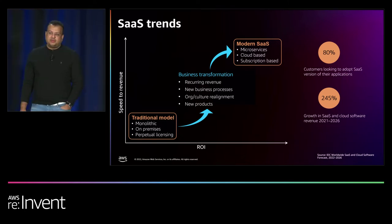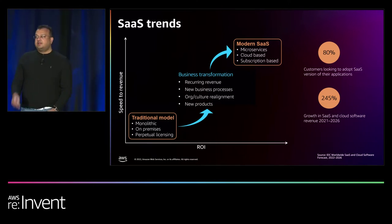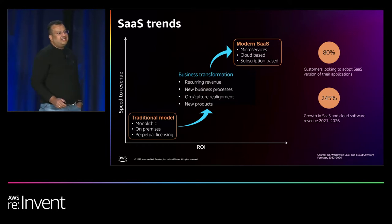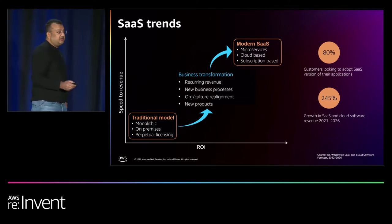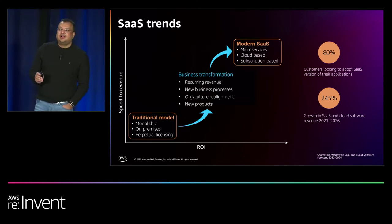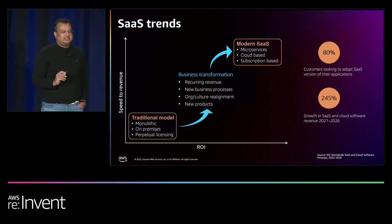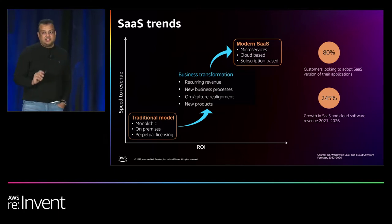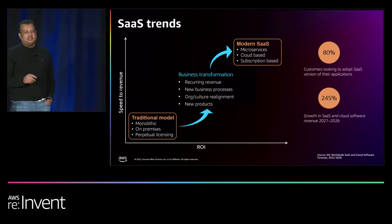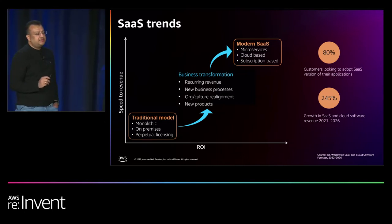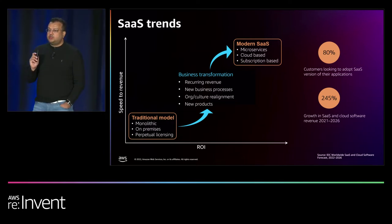According to the IDC SaaS Path Survey run earlier this year across 2,500 IT decision makers and 19 different categories of software, 80% of customers across all those applications are either already using SaaS or looking to adopt SaaS pretty quickly. This trend is universal — it doesn't apply just to a niche category of applications. IDC forecasts that in the five years ending 2026, SaaS and cloud software revenue will grow by close to two and a half times.